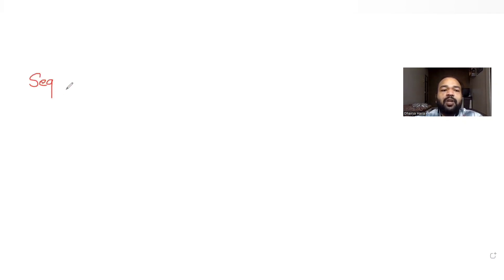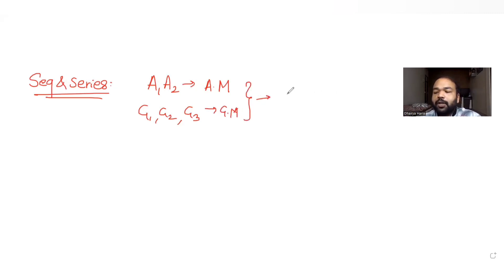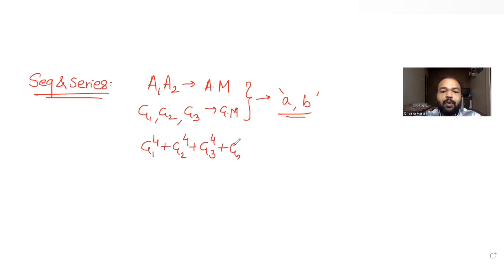Today's question is from the topic of sequence and series. The question tells us that a1 and a2 are the arithmetic means and g1, g2, g3 are the geometric means between two positive distinct numbers a and b. We have been asked to find the value of the expression g1 raised to 4 plus g2 raised to 4 plus g3 raised to 4 plus g1 squared times g3 squared.